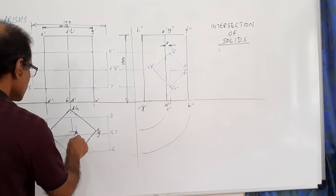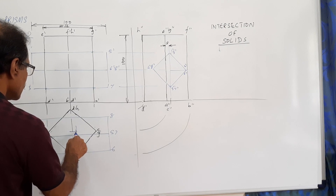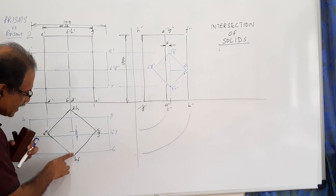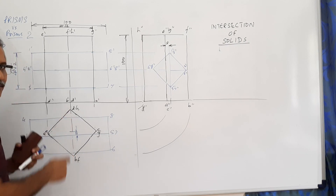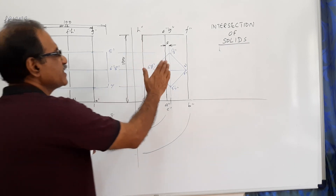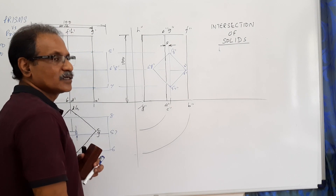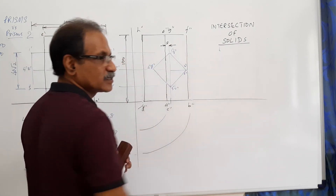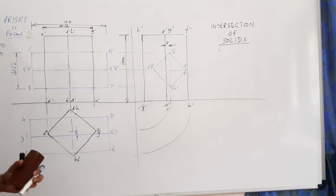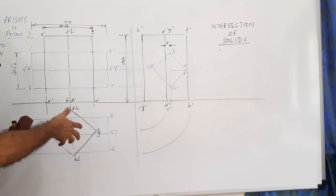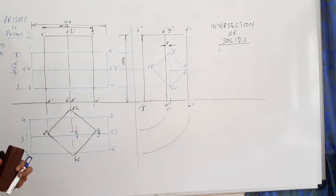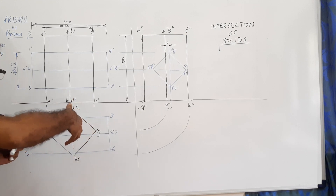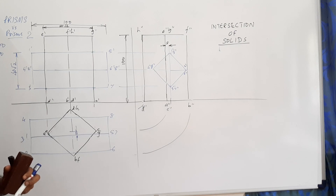This gap is small and this gap is big. You can see it is shifted to the right by 5 mm - you can shift it to the left also, but I prefer to shift it to the right. When shifted to the right, the horizontal prism axis is 5 mm in front of the vertical prism axis - it is away from VP.